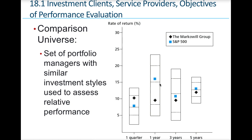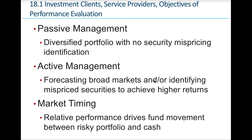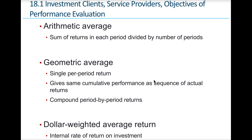We always want to compare performance to a baseline or benchmark for evaluation. Mathematically, the simplest measure is the arithmetic average — the sum of returns in each period divided by the number of periods. However, this isn't the best measure of how your money grows. A geometric average is a better measure of actual cumulative performance, capturing the compounding of returns from period to period. A geometric average is better for evaluating market returns than an arithmetic average.